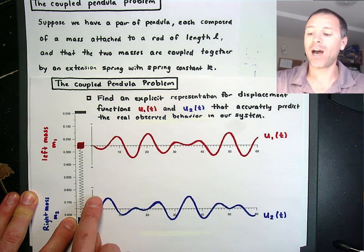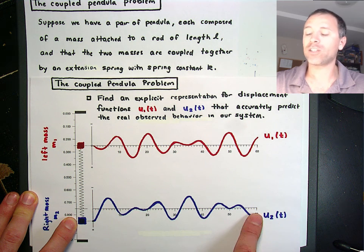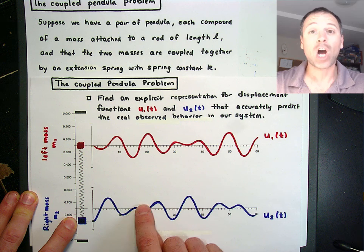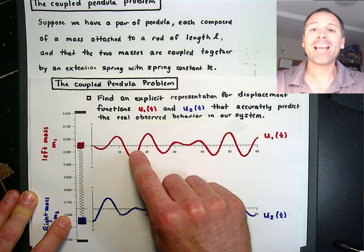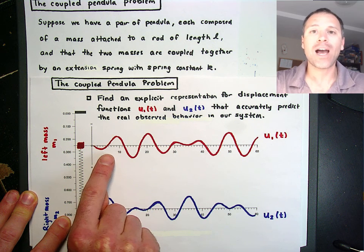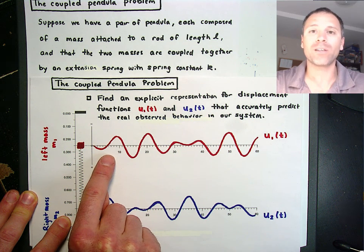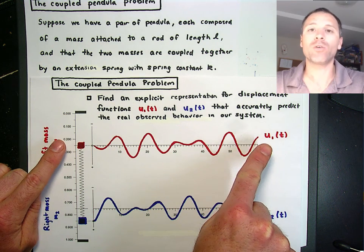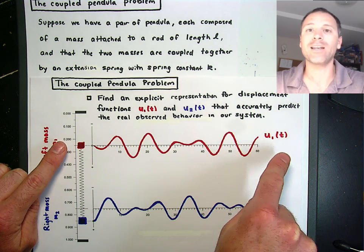And notice that if we plot the position versus time, or in this case the displacement versus time, there's a kind of complex back and forth motion, and the pendulum problem is describe those functions explicitly. Write them like u1 equals something times cosine plus something times sine, etc.